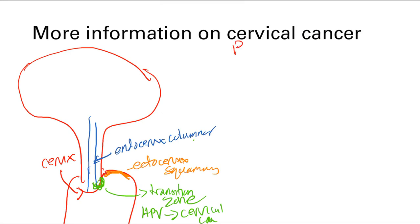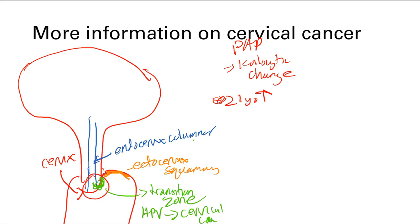To prevent HPV-related cervical cancer, we use Pap smears — swabbing the transformation zone and looking for koilocytic change. If found, colposcopy is done and a biopsy is taken. Pap smears are recommended starting at age 21 and have led to a dramatic decrease in cervical squamous cell carcinoma rates, though they are less effective at catching adenocarcinomas.